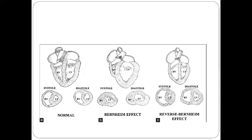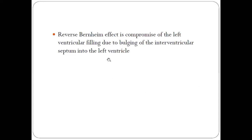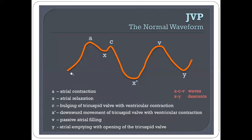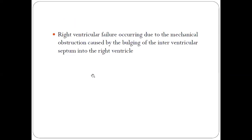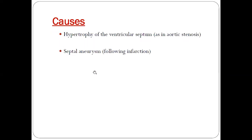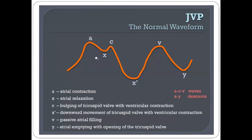Due to increased pressure in the right ventricle, in the JVP, whenever the atria is contracting, the atria has to contract against resistance in the right ventricle due to this compressive effect. This leads to a prominent A wave. The A wave is generated because of atrial contraction. When the right ventricular pressure is very high, the right atrium has to contract against that pressure, causing more backflow into the JVP, making the A wave more prominent. That is why in aortic stenosis, even without right ventricular failure, there can be a prominent A wave.